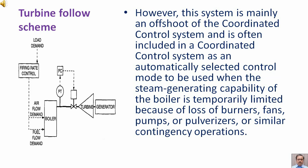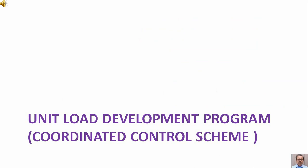However, this system is mainly an offshoot of the coordinated control system, and is often included in a coordinated control system as an automatically selected control mode, to be used when the steam generating capability of the boiler is temporarily limited because of loss of burners, fans, pumps, pulverizers, or similar contingency operations.